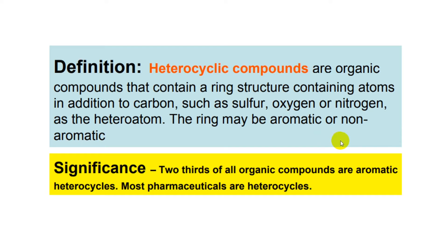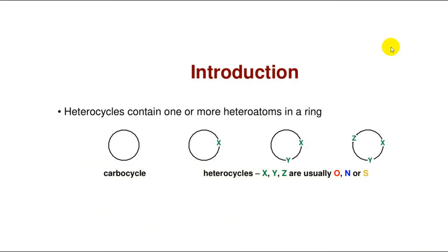Most pharmaceuticals are heterocyclics. Heterocyclics are important and a large proportion of natural products contain them. Many pharmaceutical and agrochemical compounds contain a heterocyclic unit. Heterocyclic systems are important building blocks for new material processing.